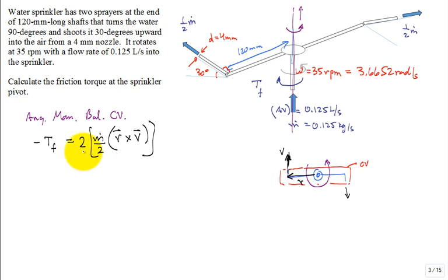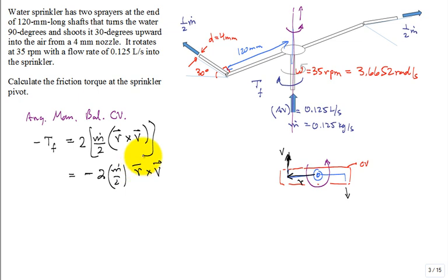Using the right hand for R cross V, that cross product will be in the negative direction. Dropping to scalar notation since we know it's around that axis and in the negative direction, it becomes simply R times V because R and V are perpendicular. Now we need to work out what that V actually is.